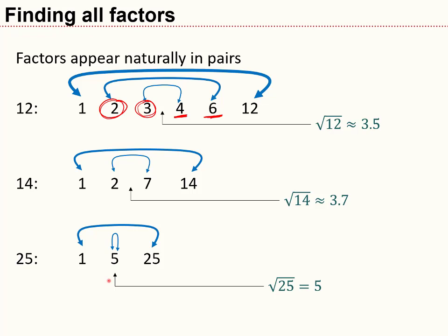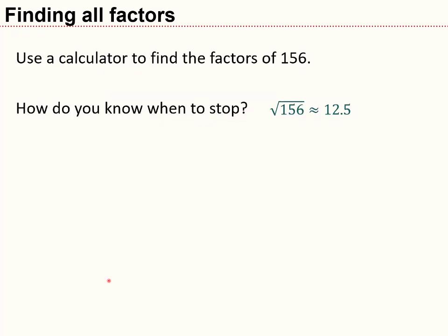Let's use this pairing and the square root to find all factors of 156 using divisibility rules. How do I know when to stop? I'll test numbers starting from 1, and stop when I reach the square root of 156, which is about 12.5. So I only need to test 1 through 12, and we've just talked about all those divisibility rules.